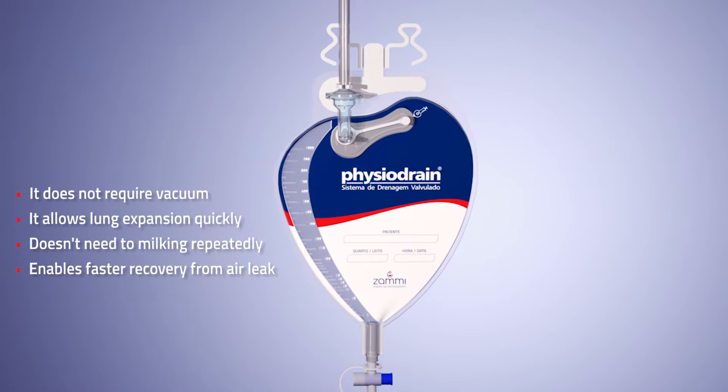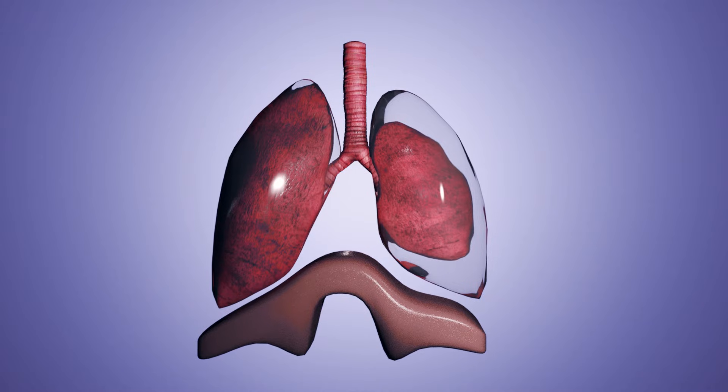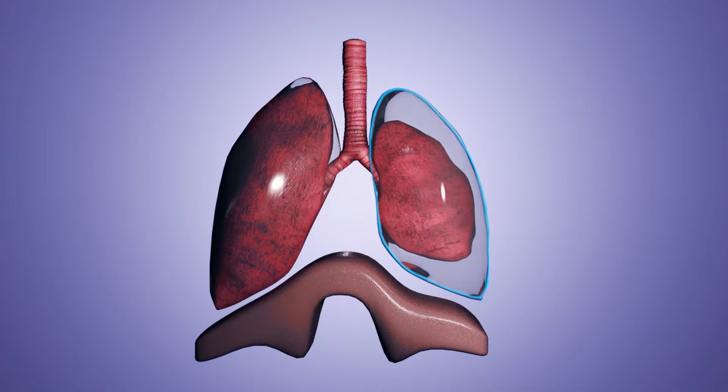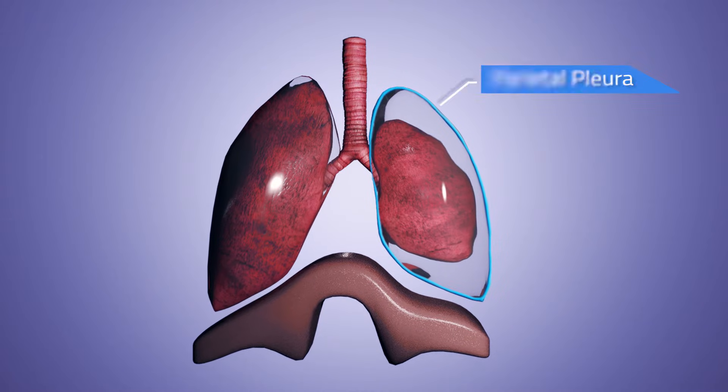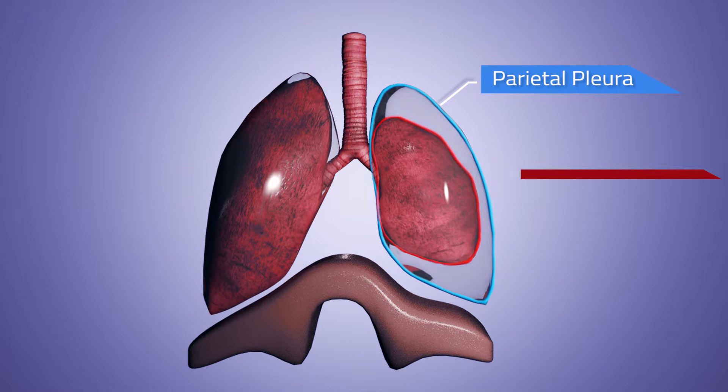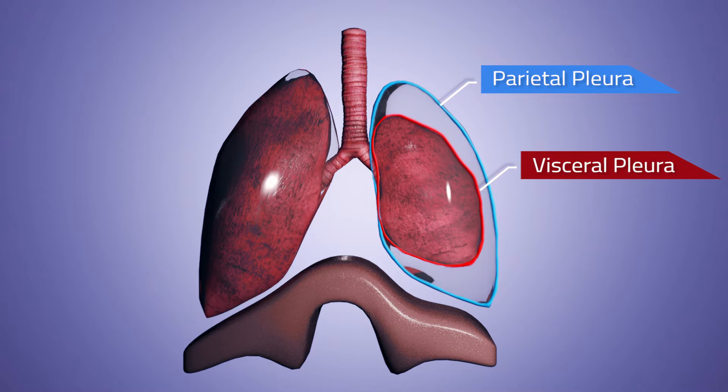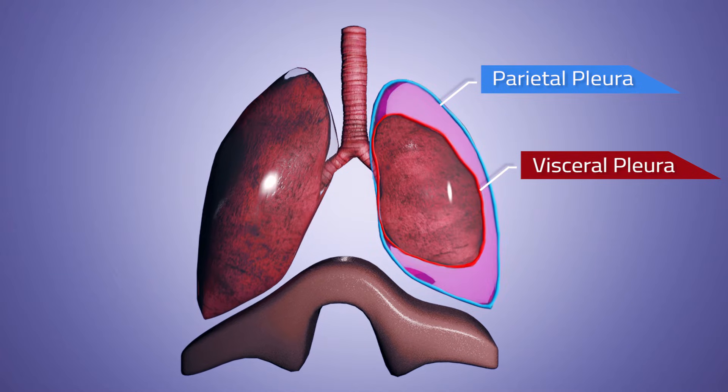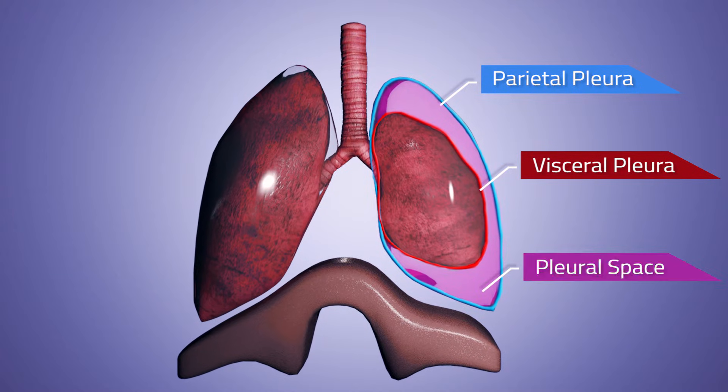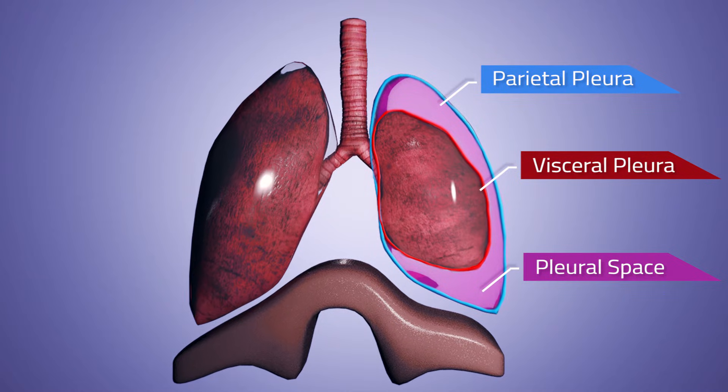The lung is covered by a membrane called pleura which is composed of two layers. The outer layer is called the parietal pleura and is in contact with the thoracic cavity. The inner layer is called the visceral pleura and is in contact with the lung. Between the visceral pleura and the parietal pleura is the pleural space that has a thin layer of liquid as a lubricant to reduce the impact during breathing movements.